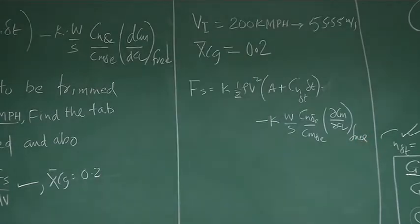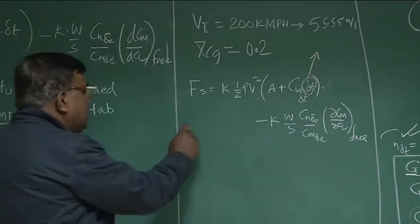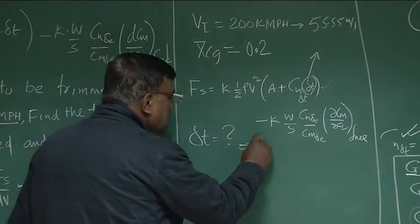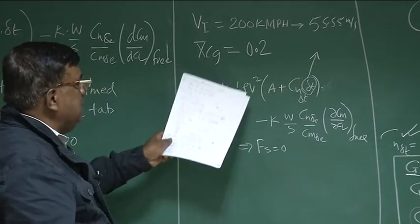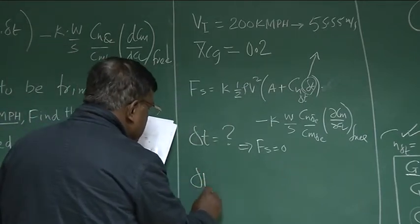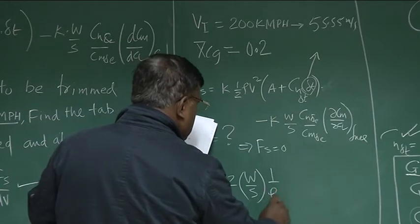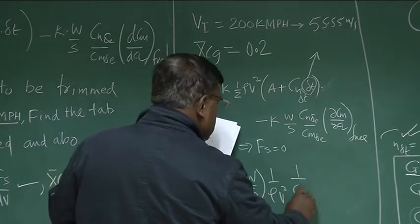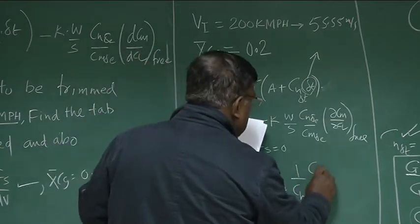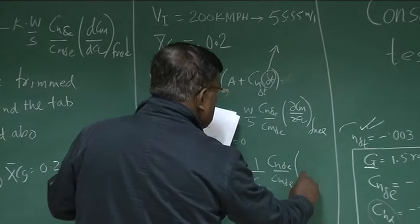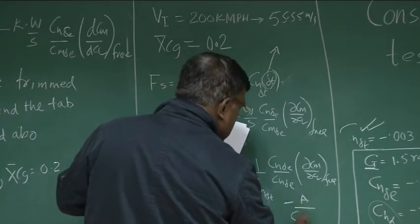Now, what is Fs? Fs is, let me write this. Fs is k half ρ V square A plus CH_δt into δt minus k, I write here, minus kW by S CH_δe by CM_δe, this delta means elevator, into dCm by dCl free. Now what is the question? Question is, what is the value of δt? That is, what is the value of tap setting angle? So what is the question? Question is, what is δt so that Fs equal to 0. That is the question. So now, if I put Fs equal to 0 and manipulate this expression,